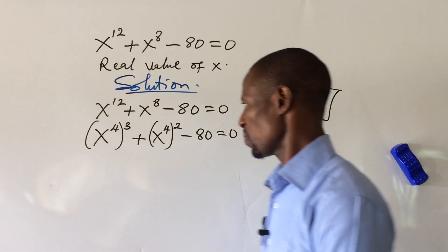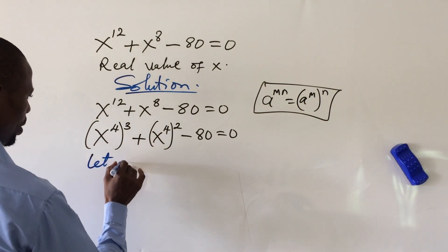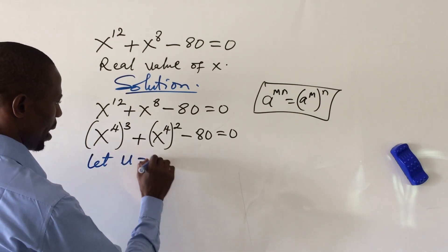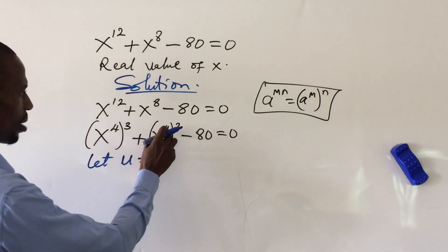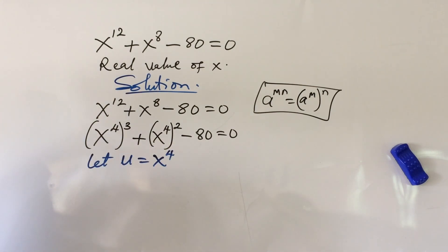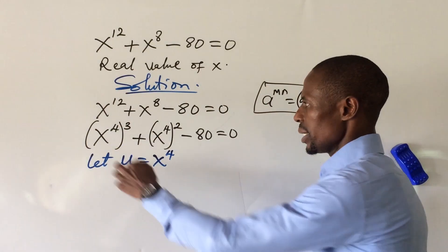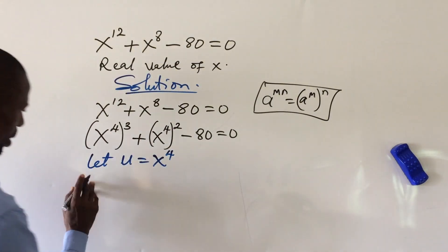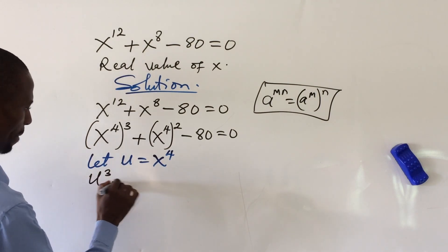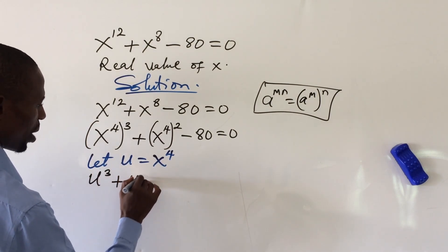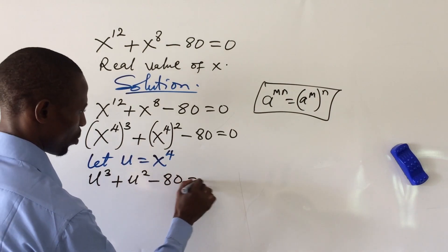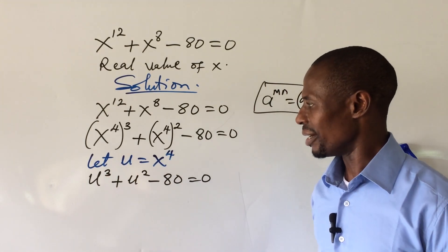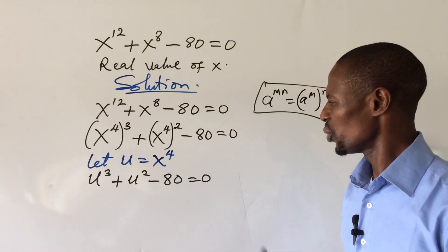At this point we let u equal to x to the power of 4. So wherever we see x to the power of 4, we substitute u. Our equation can now be written as u cubed plus u squared minus 80 equals zero. This is now a third-degree polynomial equation.